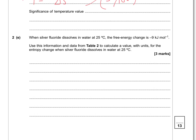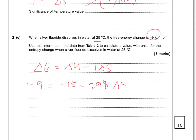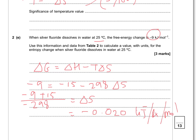When silver fluoride dissolves in water at 25°C, the free energy change is −9. Use this information and data from table 2 to calculate a value with units for the entropy change when silver fluoride dissolves in water at 25°C. Using ΔG = ΔH − TΔS: −9 = −15 − (298 × ΔS), so ΔS = (−9 + 15) / (−298) = −0.020 kJ K⁻¹ mol⁻¹. If you want it in J K⁻¹ mol⁻¹, multiply by 1000.